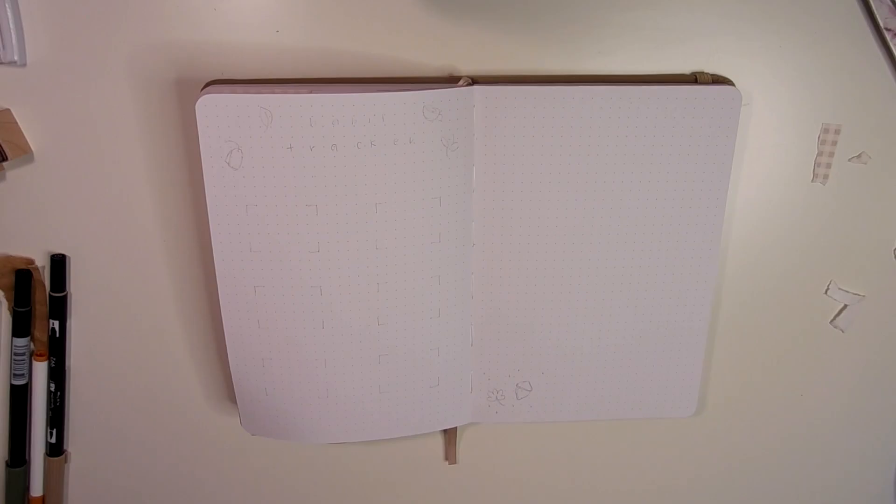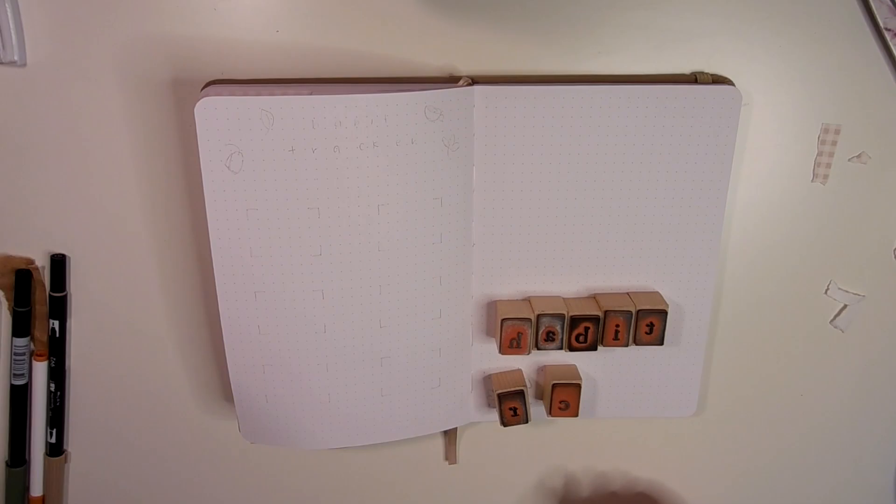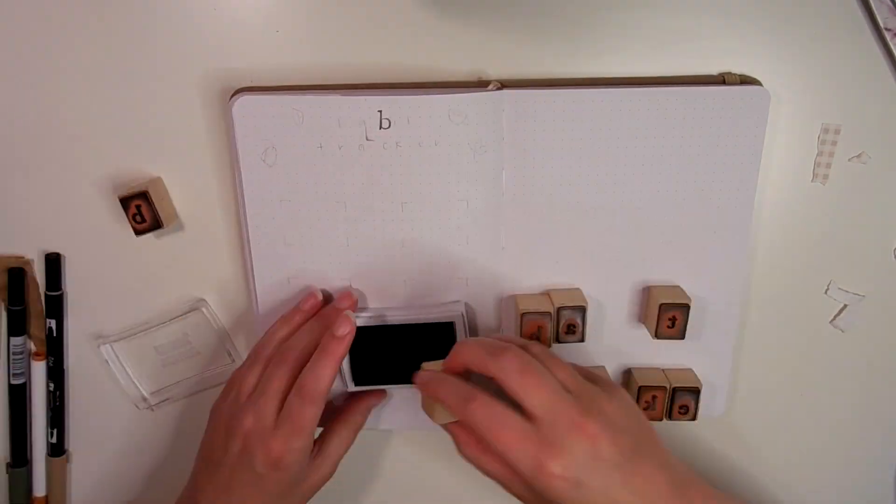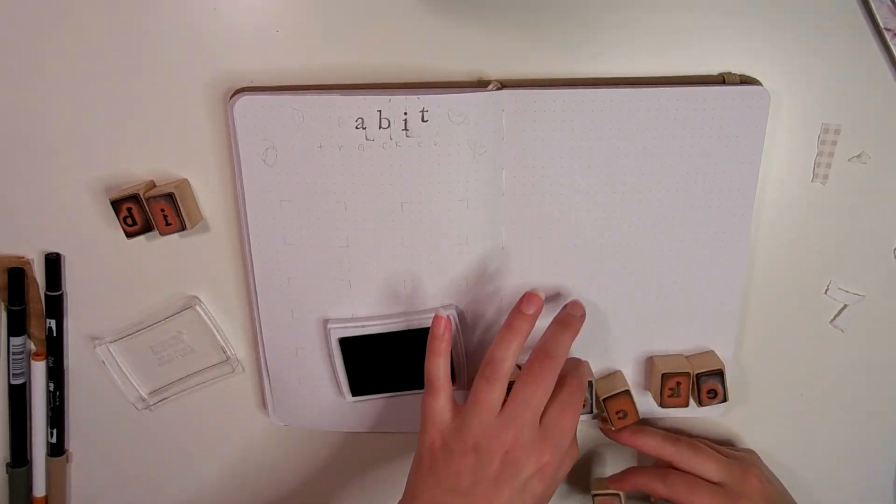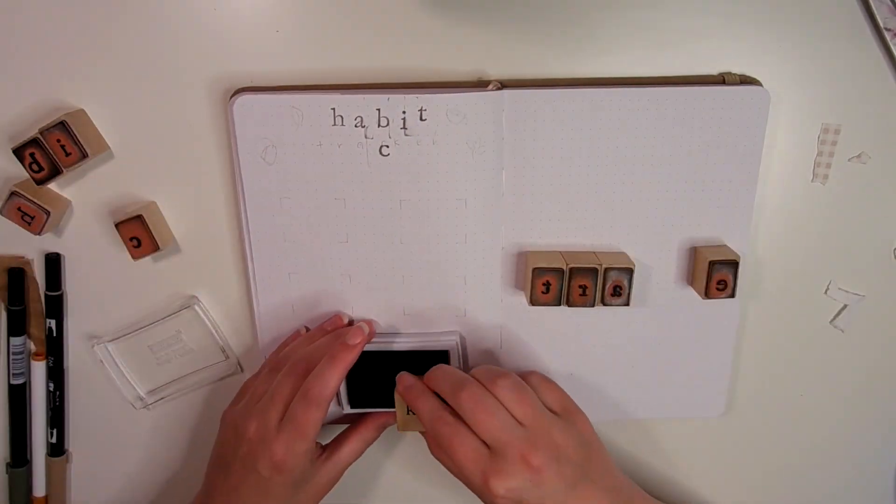Moving on to my habit tracker. I'm getting out all the stamps to write out habit tracker. That's the part that took the longest—getting all the stamps I need for each title. I'm writing habit tracker up at the top with the stamps and doing some doodles around as well, some of those fall doodles to add the theme into this page.